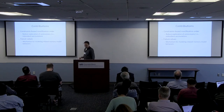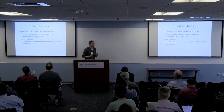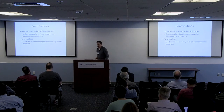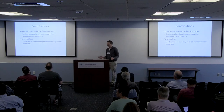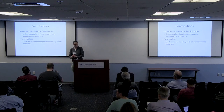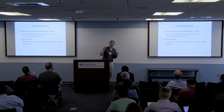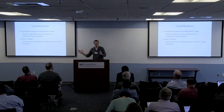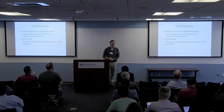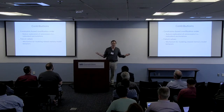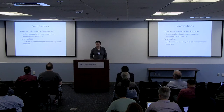Our work on model checking C and C++ has two primary contributions. First is the development of a constraint-based approach to modeling the modification order that drastically reduces redundant execution exploration. Second is addressing the odd challenge that loads can read from stores that happen later in the execution — a load can read from the future, which presents a huge challenge for model checking because we see the load before knowing what value it should return.